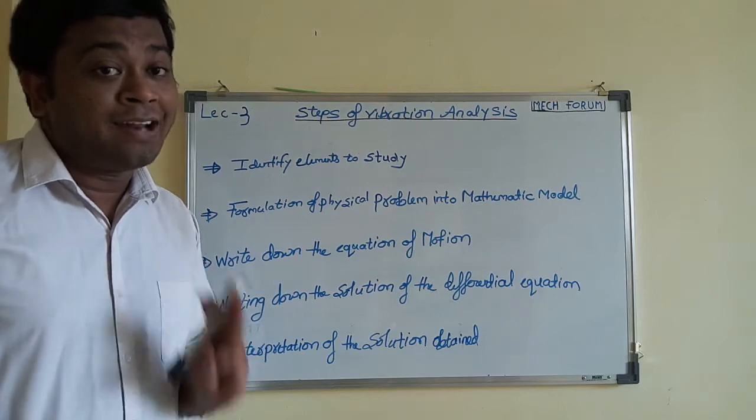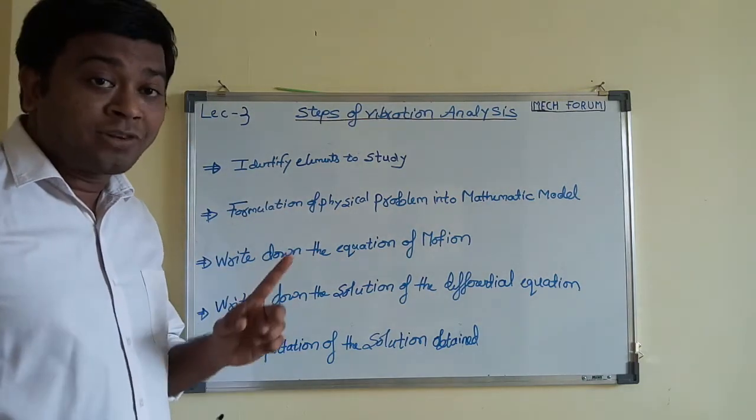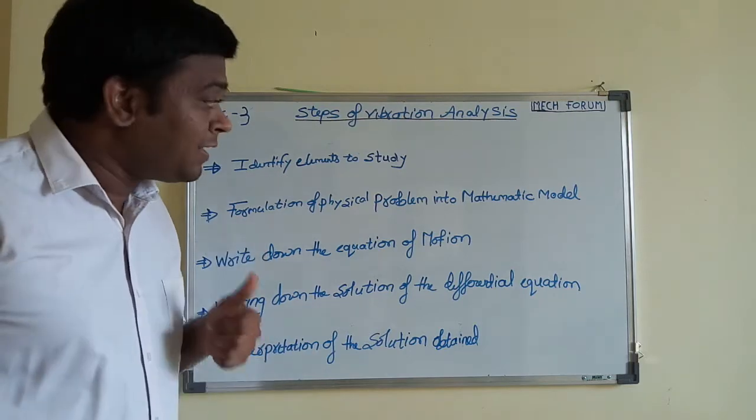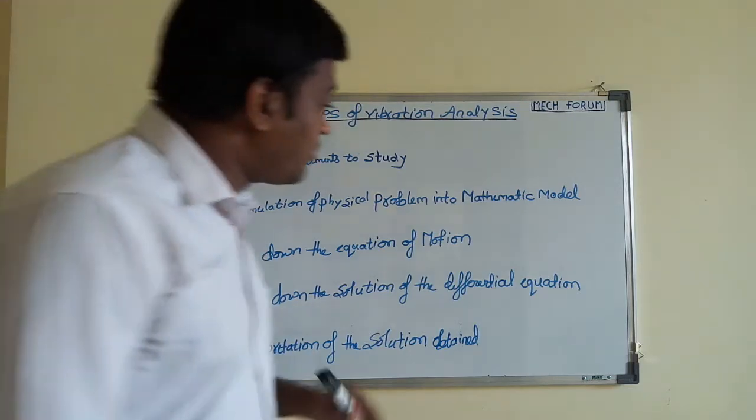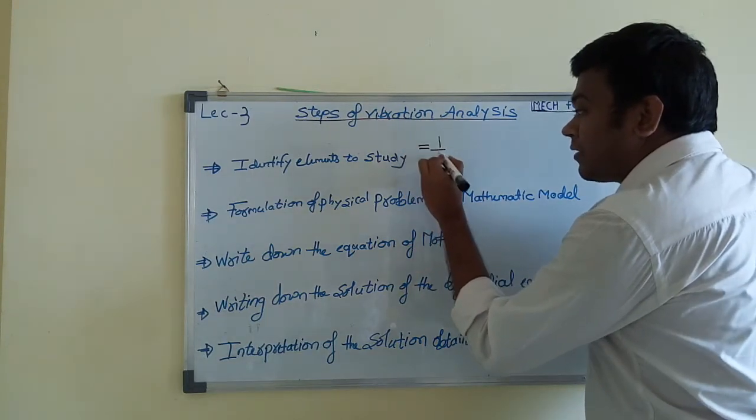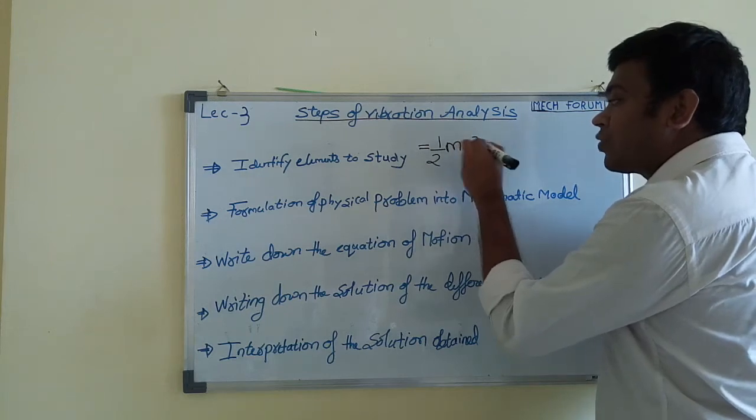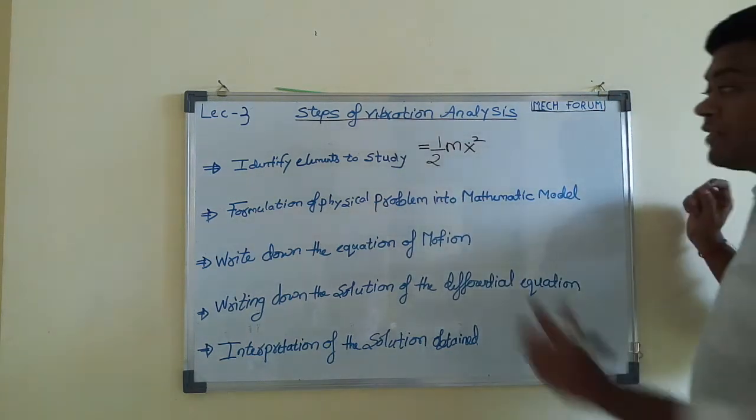As in the previous lecture, the three elements that we studied are mass, spring, and damper. We have to identify these three components. Your mass component will possess the kinetic energy, given by the formula half m x dot square.